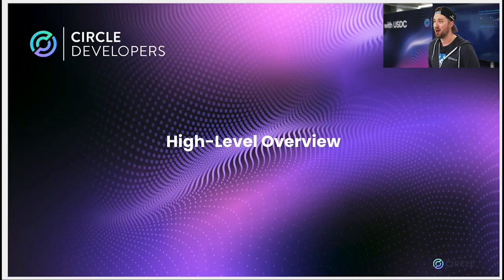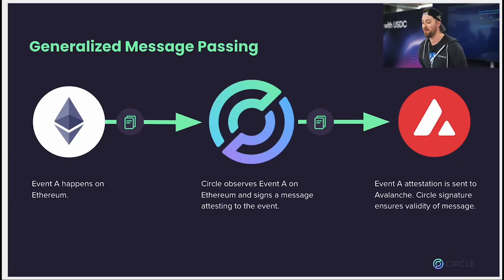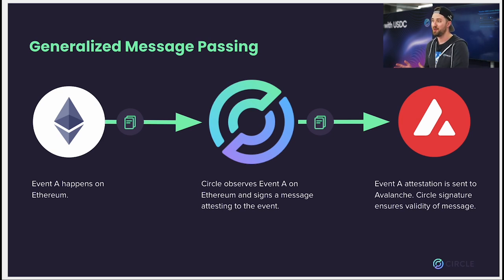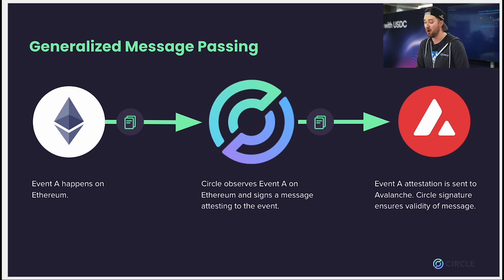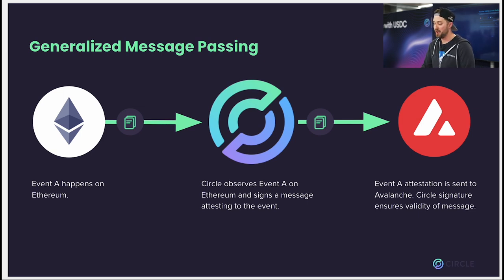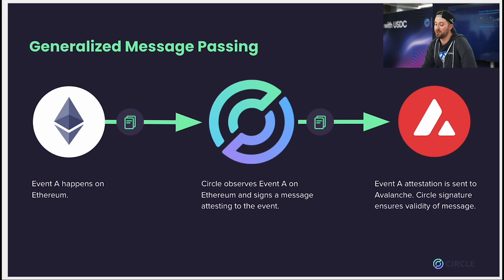Now that we talked about what we wanted to build, let's talk about how we built it — a high-level overview. In practice, let's consider passing a message from Ethereum to Avalanche. At a very high level, an event would first happen on Ethereum which emits some message. Next, our attestation service will observe the event happening and sign a message saying that it has seen event A on ETH. Anyone can call this off-chain API and say, 'Hey Circle, I want an attestation for event A.' Our API will return the event data along with the attestation. The event data and attestation can then be passed into a contract on AVAX. All the contract needs to do is verify the author of the signature, and then it can trust that the message is valid and take whatever steps it wants to.